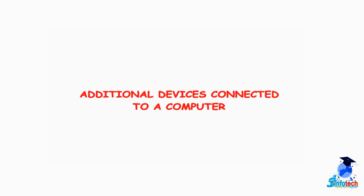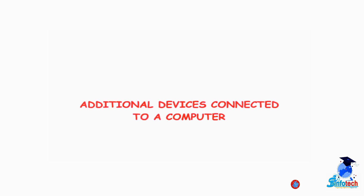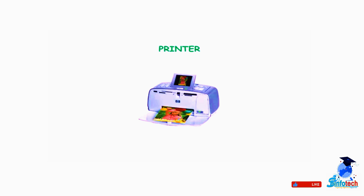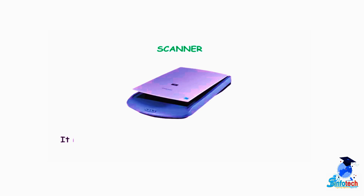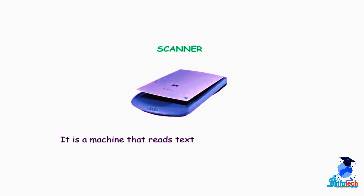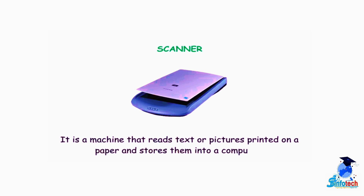Now, let us talk about additional devices which connect to a computer. Printer: It is used to take a printout on a paper. The printed copy is called a hard copy. Scanner: It is a machine that reads text or pictures printed on a paper and stores them into a computer.